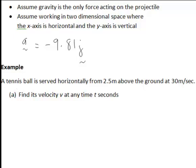In the following example a tennis ball is served horizontally from 2.5 metres above the ground at 30 metres per second. Let's start by finding the velocity. Now acceleration is the rate of change of velocity with respect to time, therefore to find the velocity from the acceleration we must use anti-differentiation.